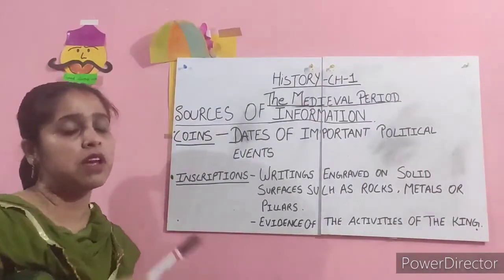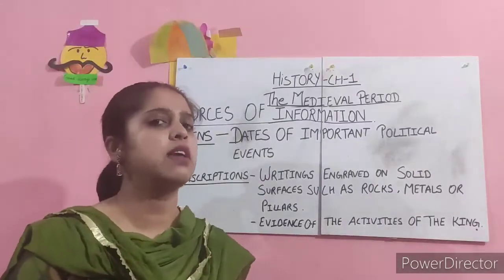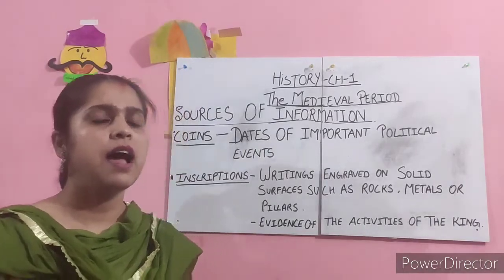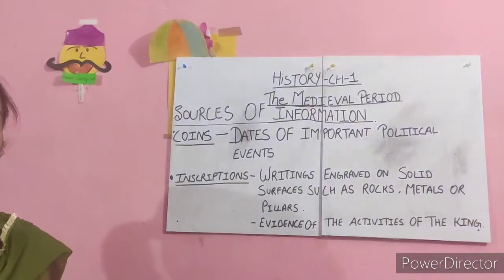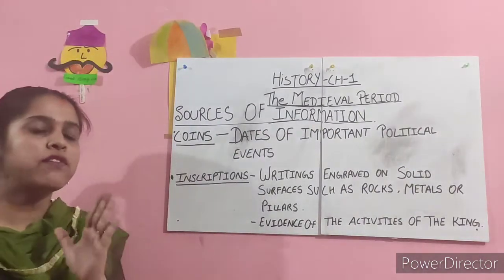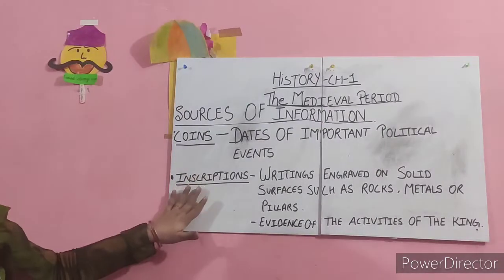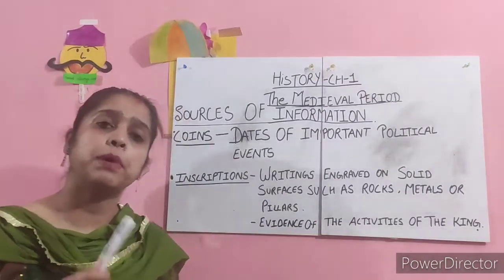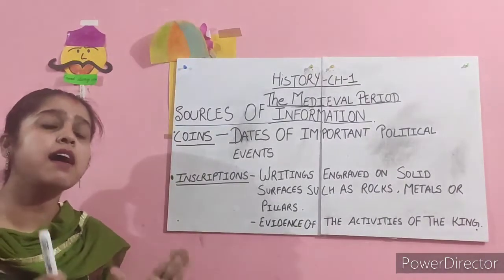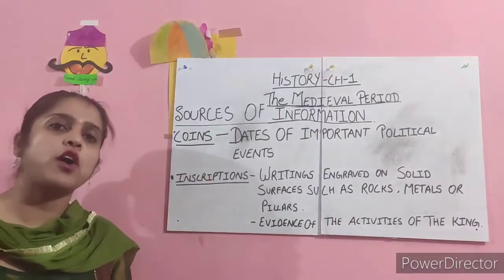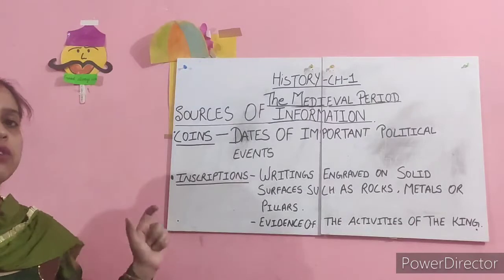Next comes inscriptions — another important source. What are inscriptions? Inscriptions are writings engraved on hard surfaces like metals, rocks, and pillars. Why are inscriptions important? Because they act as evidence of the activities of the king of that period. Inscriptions give us the details and evidence of the activities of the king of the medieval period.